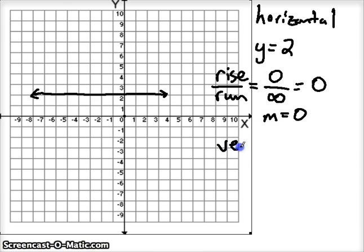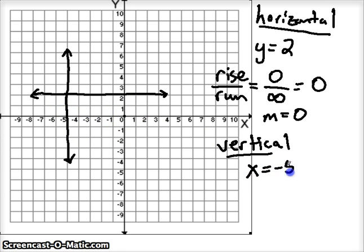Vertical lines look like this. They go up and down. And they cross the x-axis. So where does it cross the x-axis? Well, this particular one crosses it at negative 5. So x equals negative 5.